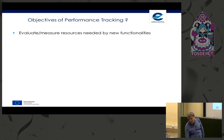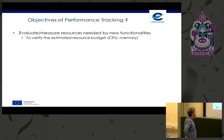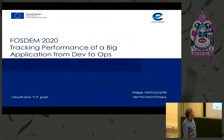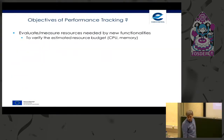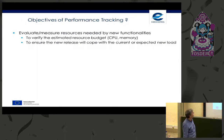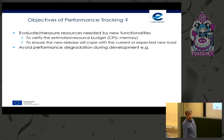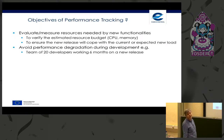What are the objectives of performance tracking? The objective is to evaluate and measure resources needed by new functionalities. Another objective is to verify the estimated resource budget — CPU and memory — of what you develop. We also want to ensure that a new release will cope with the current or expected new load, and we want to avoid performance degradation during development.